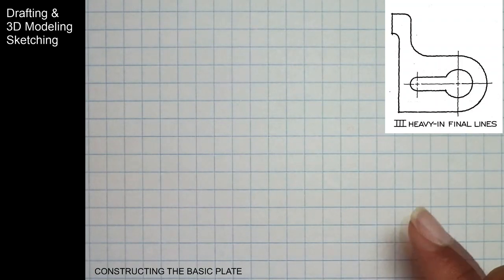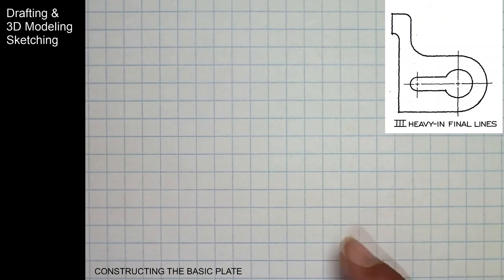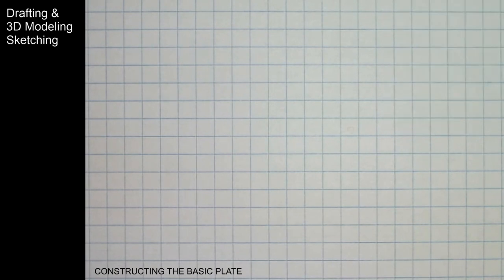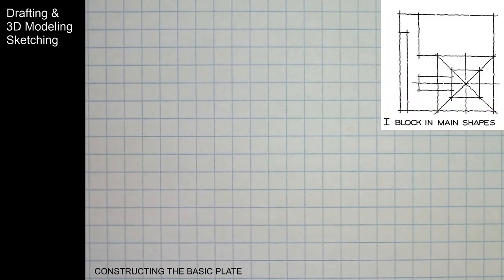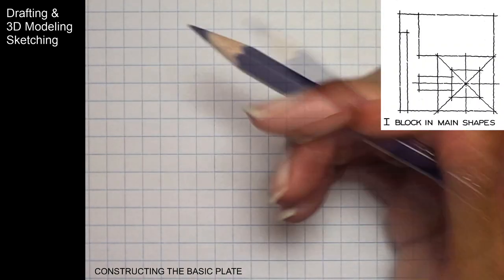We're looking at the construction of the basic plate, which is in this corner. The first step is to block in our layout, or blocking the drawing. I'm going to start with blue as my construction line.